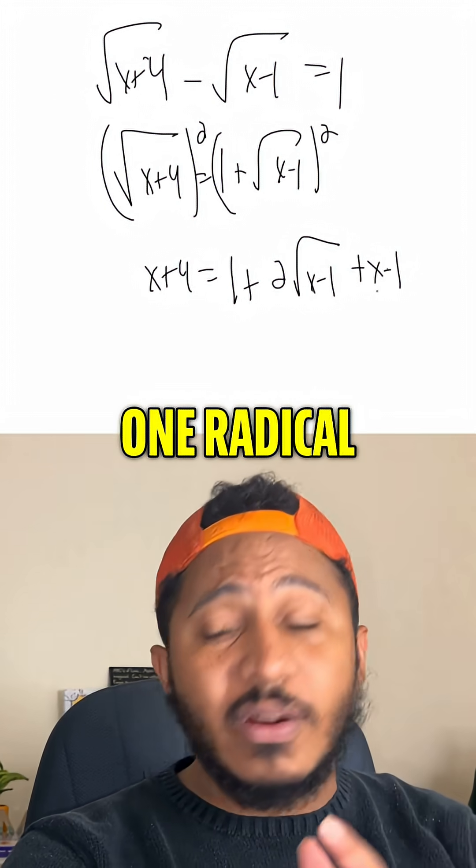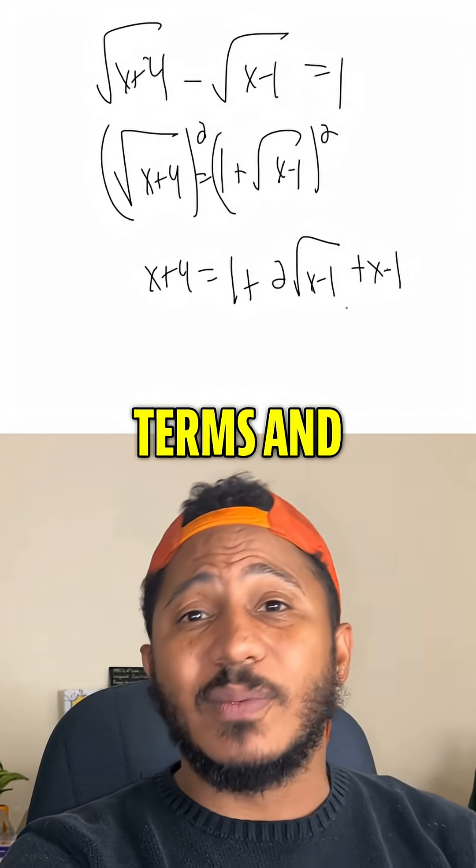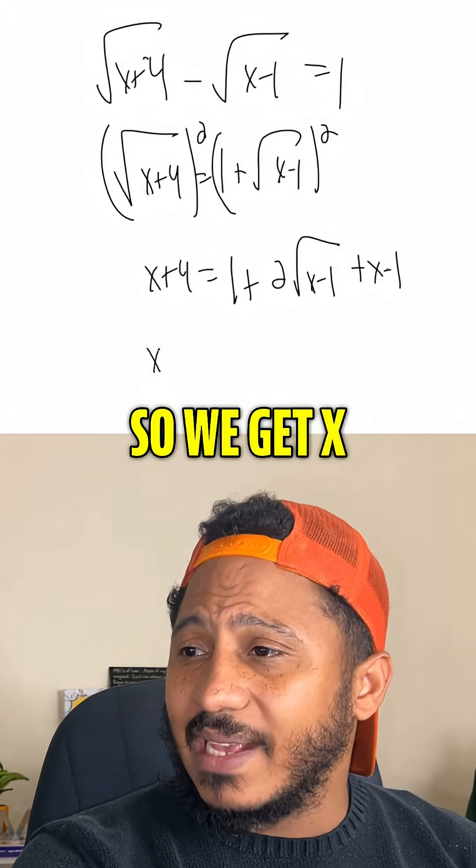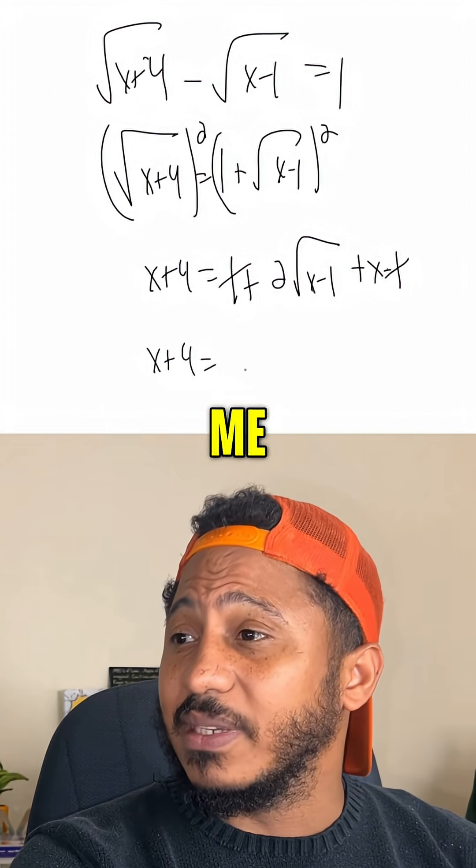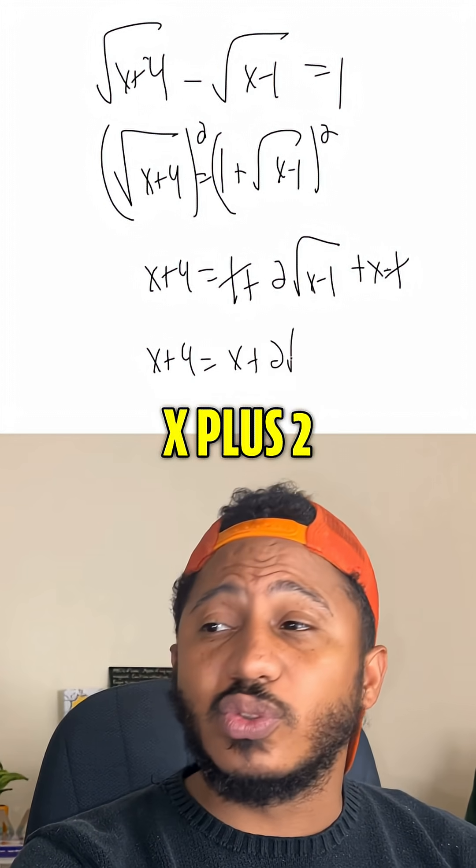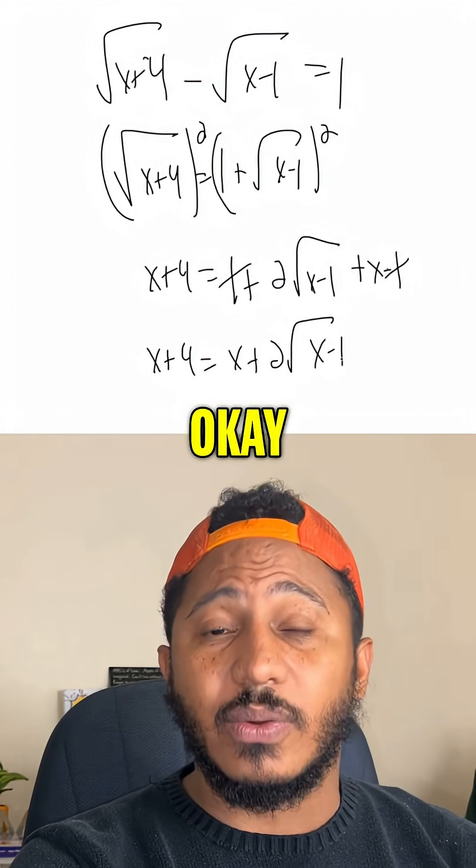Now, we have only one radical, and so now, let's first combine like terms and then get the radical by itself. We get x plus 4 equals, combining like terms, well, the 1 and negative 1 cancel, so this gives me x plus 2 square roots of x minus 1.